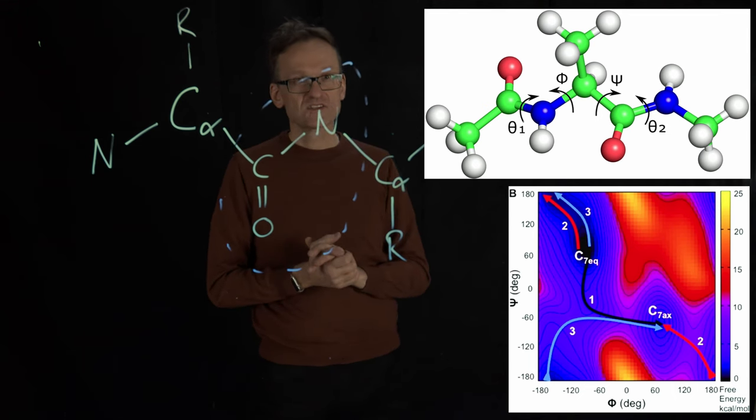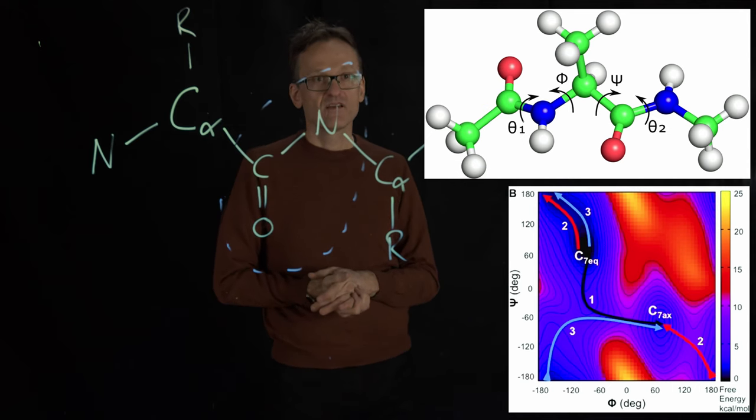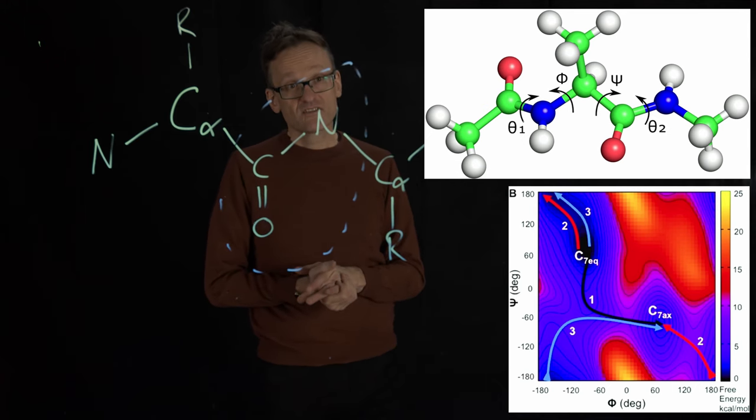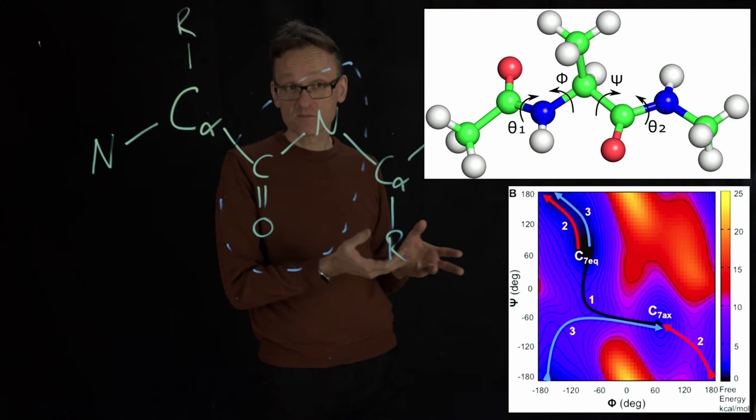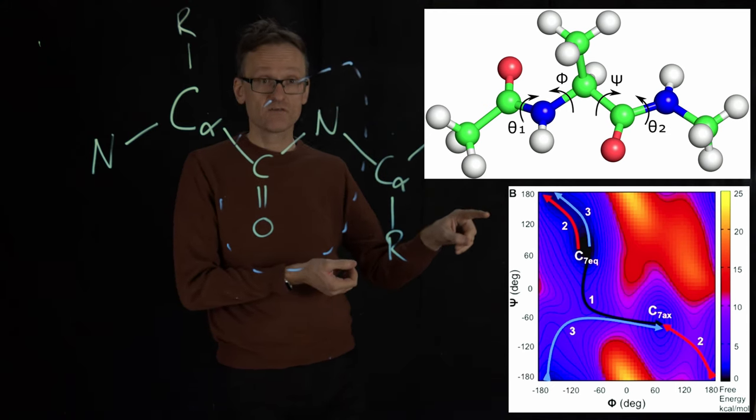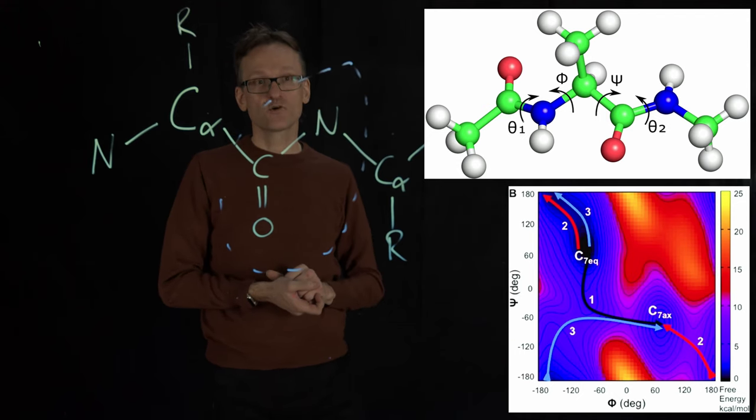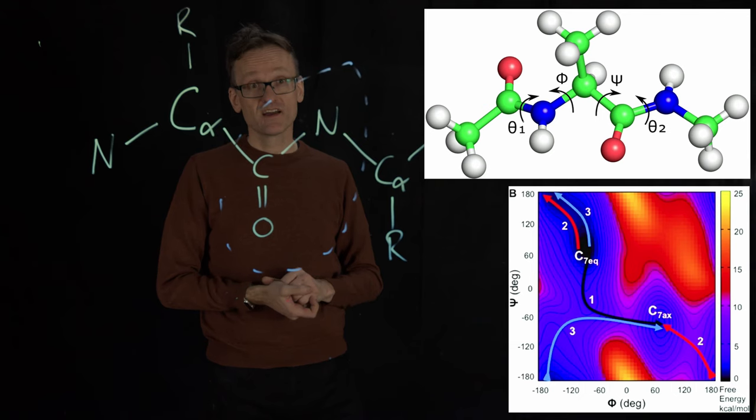The red area here is going to be a bad part where things are clashing and you do not want to spend time there. It turns out this was calculated from a simple molecular simulation. If we now take this blue area up here, one local minimum, and the other local minimum on the other corner there, we know what the Phi and Psi angle is at the center of each of those minima.